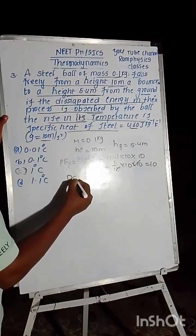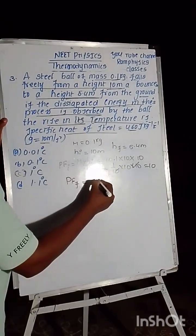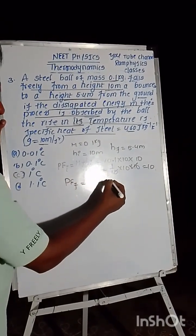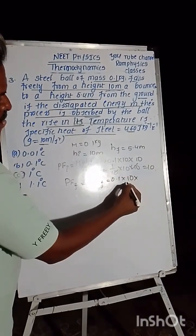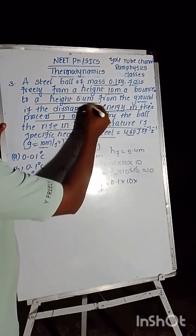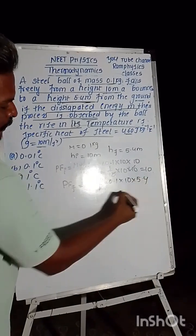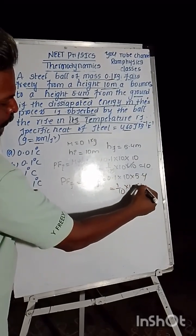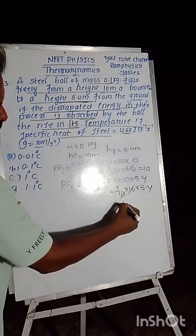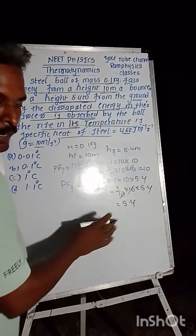And the final potential energy is equal to mgh_f. That is equal to mass 0.1, g is 10, and height is 5.4 meters. That is 1/10 into 10 into 5.4. These two will be cancelled, that is 5.4.